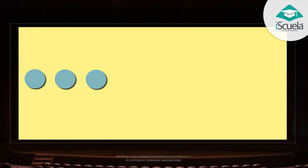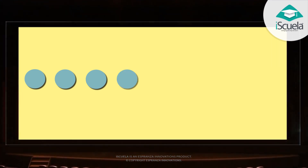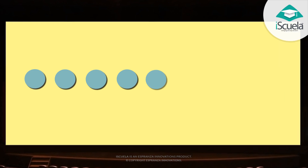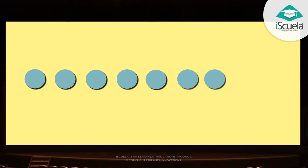Four dots are more than three. Five are more than four. Let us count one more. Six dots are more than five. Seven are more than six. Let us count as I am in a fix.